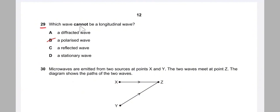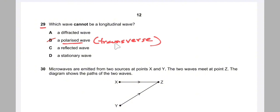Question 29: which wave cannot be a longitudinal wave? A polarized wave cannot be longitudinal because polarization is only possible for transverse waves — longitudinal waves cannot be polarized. The correct answer is B.